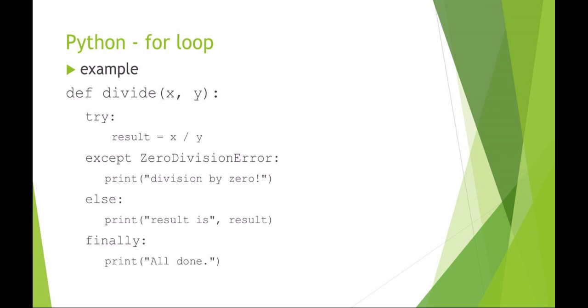So I'm going to try, so my result is x divided by y. Except if I've got an error, it's going to print error. Else, meaning there's no exception, it's going to print the result. And then when everything else is completed, you can add a finally and it'll print out your exit command. So this is your try, except, else, and finally syntax for Python.